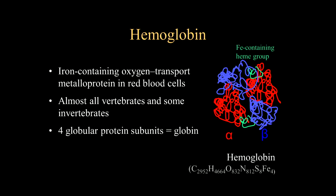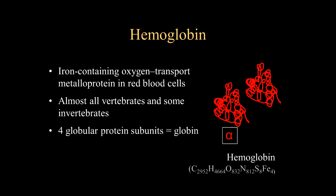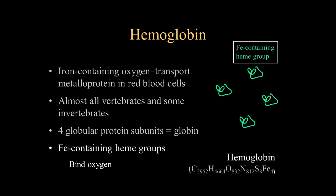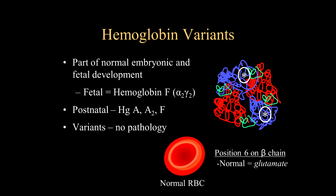Starting off, we want to look at the hemoglobin molecule. This is an iron-containing oxygen transport system comprised of both metals and proteins located within the red blood cells. Almost all vertebrates and surprisingly some invertebrates contain hemoglobin. It is comprised of four globular protein subunits called the globin, with an alpha chain and a beta chain. In addition, there are iron-containing heme groups, and these are what actually bind the oxygen. Hemoglobin variants exist, both as part of normal development as well as abnormal pathology.